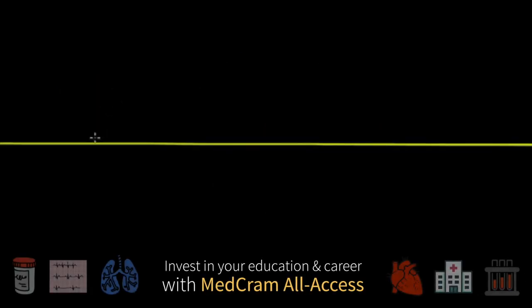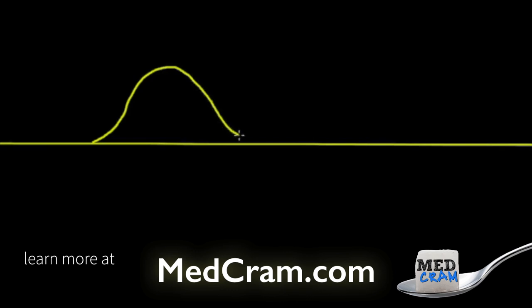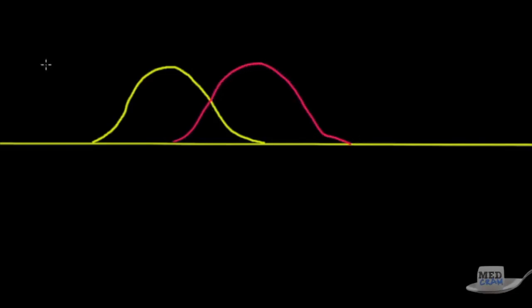Going back to the car example, here is a population of all things that could falsely set off an alarm — motorcycles, boom boxes, things of that nature — and here is the population of things that represent true threats, i.e., what thieves could do. This is the disease-negative state versus the disease-positive state. The problem is there's some overlap, so no matter where you set your threshold for sensitivity, you're going to include one or the other.